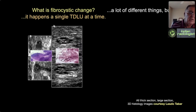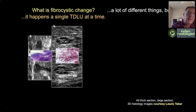In fibrocystic change, the acini become fluid distended. I can see seven fluid-distended or cystically dilated acini. I also see the extra lobular terminal duct and interlobular terminal duct in the center. The normally loose gray stromal tissue becomes abnormally white—that's the fibro part of fibrocystic change.